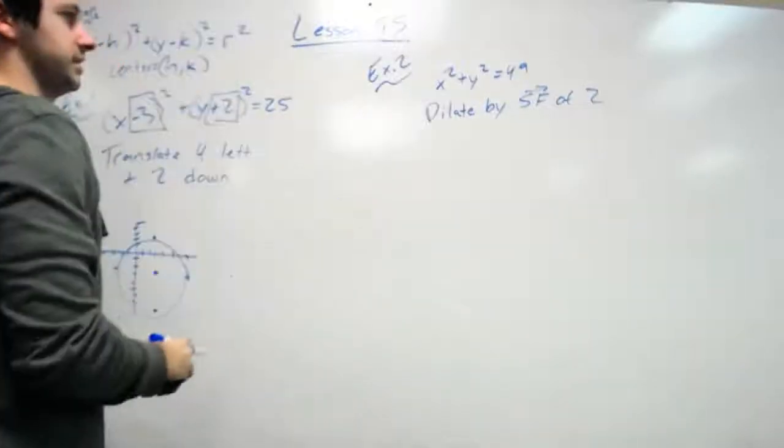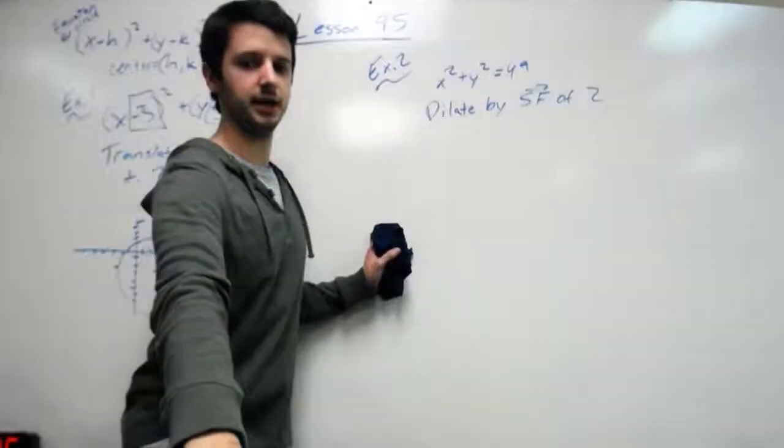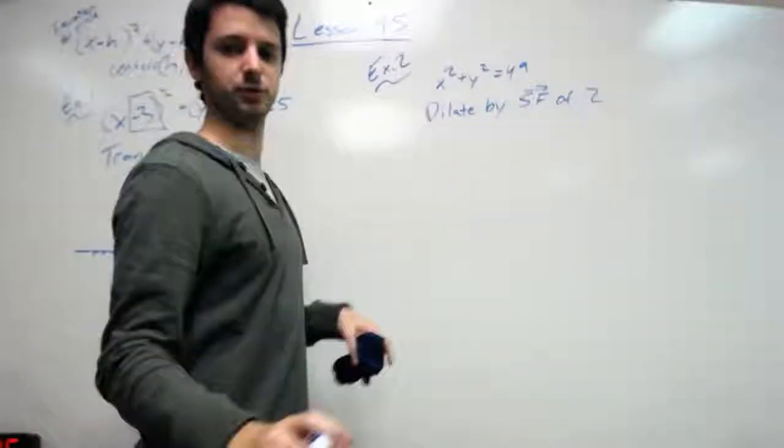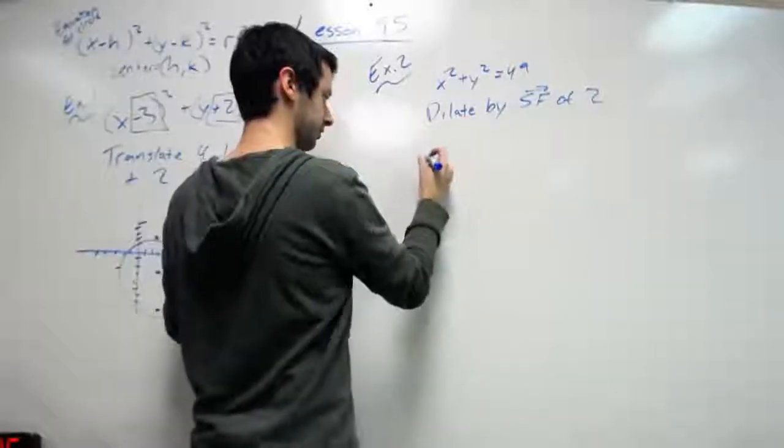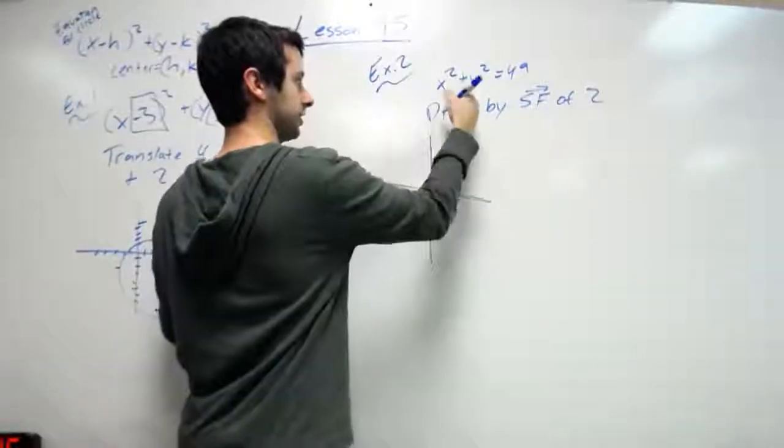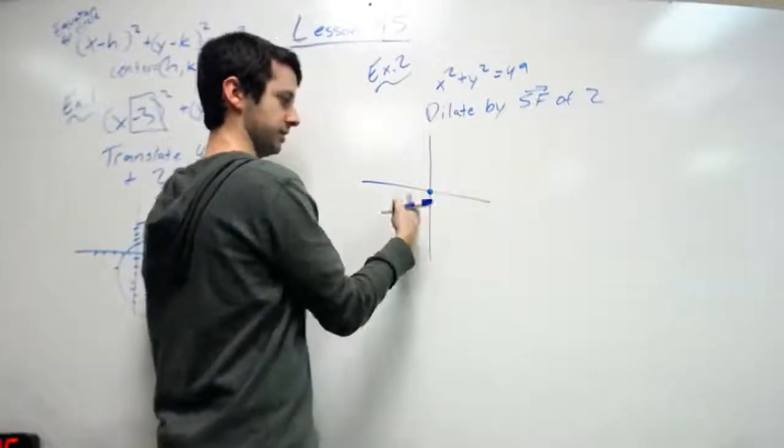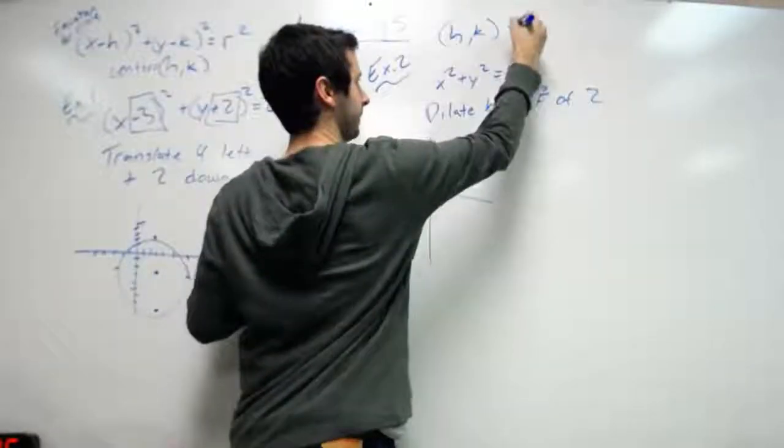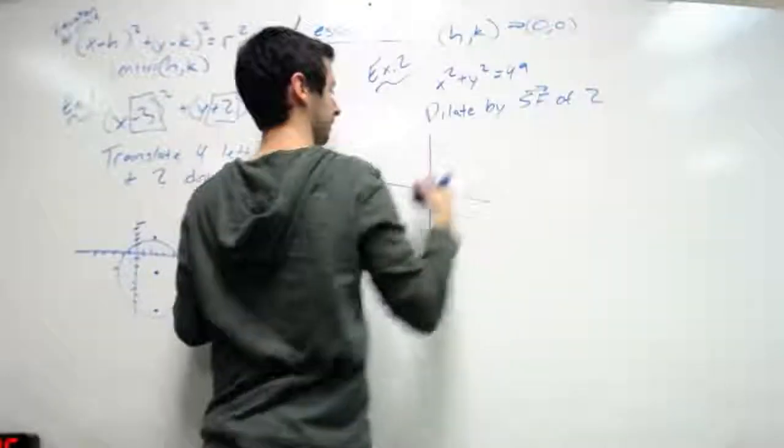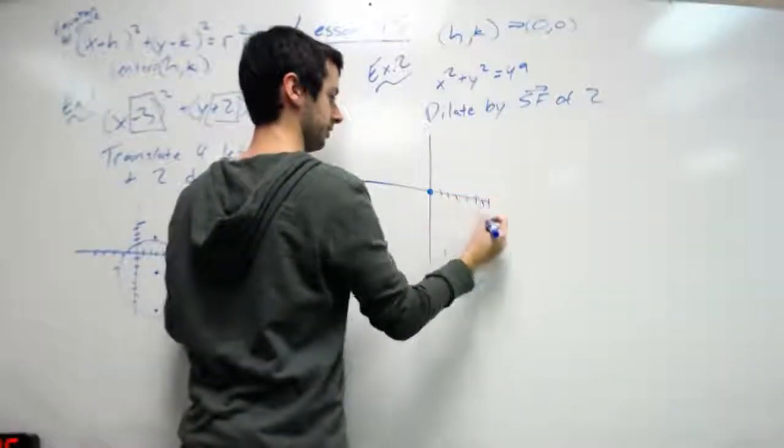Example two, it says we have x squared plus y squared equals 49, and it wants to dilate by a scale factor of two. So if we are dilating a circle, I'm going to go ahead and draw this out. x squared, y squared, so there's nothing it's subtracting, so that means origin is the center, and it has a radius of seven.